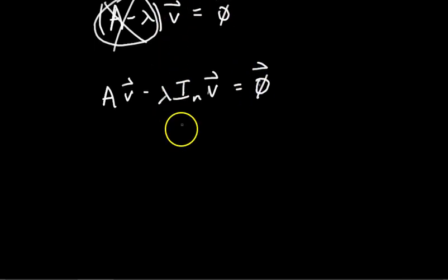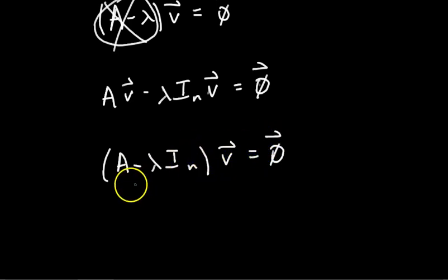The reason I did this is because now when I factor out V, A minus lambda I_n times V equals zero. When I factor out the V, now this is a matrix minus a matrix. So this is going to be defined.